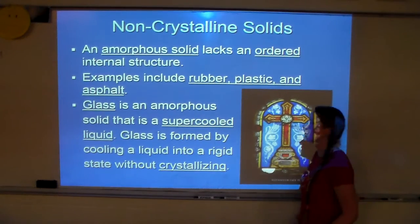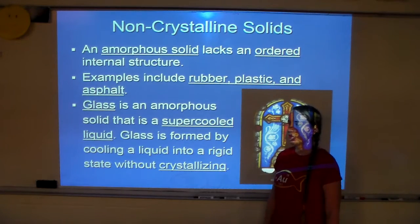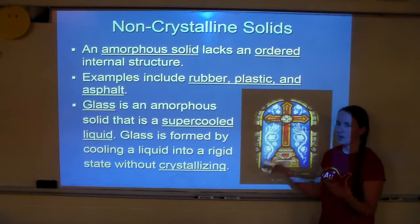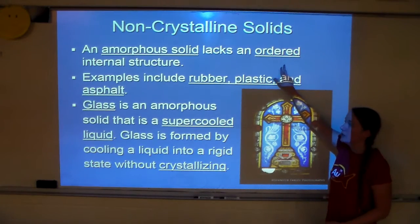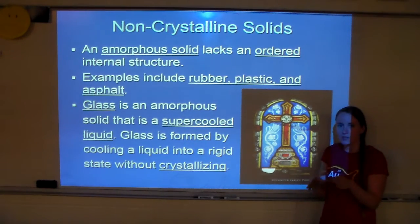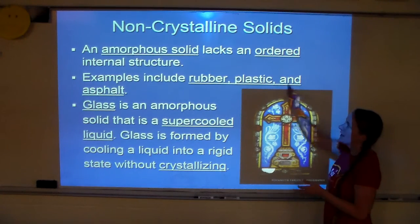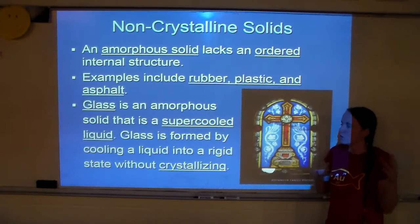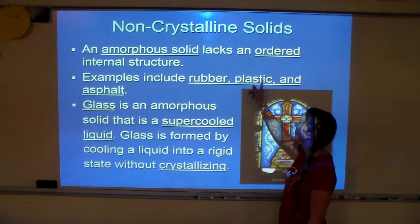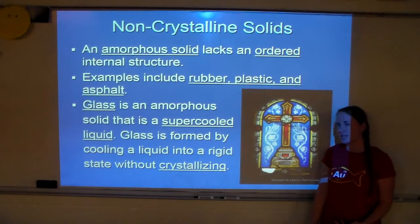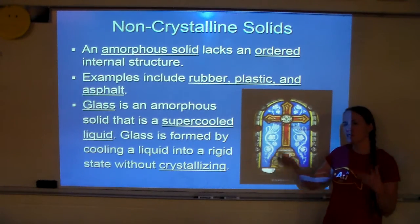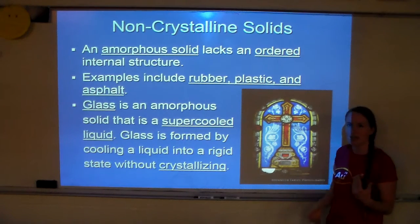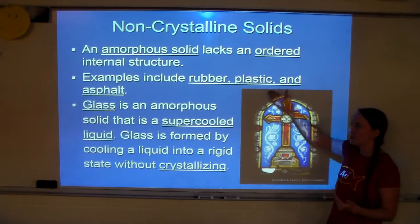Not all solids are crystals — there are also amorphous solids. Amorphous solids lack an ordered internal structure. Whereas crystals are super orderly with a 3D repeating pattern and a crystal lattice, amorphous solids don't have that ordered structure. Examples include rubber, plastic, and asphalt. You can think about what these look like compared to salt or sugar crystals and see the visual difference.